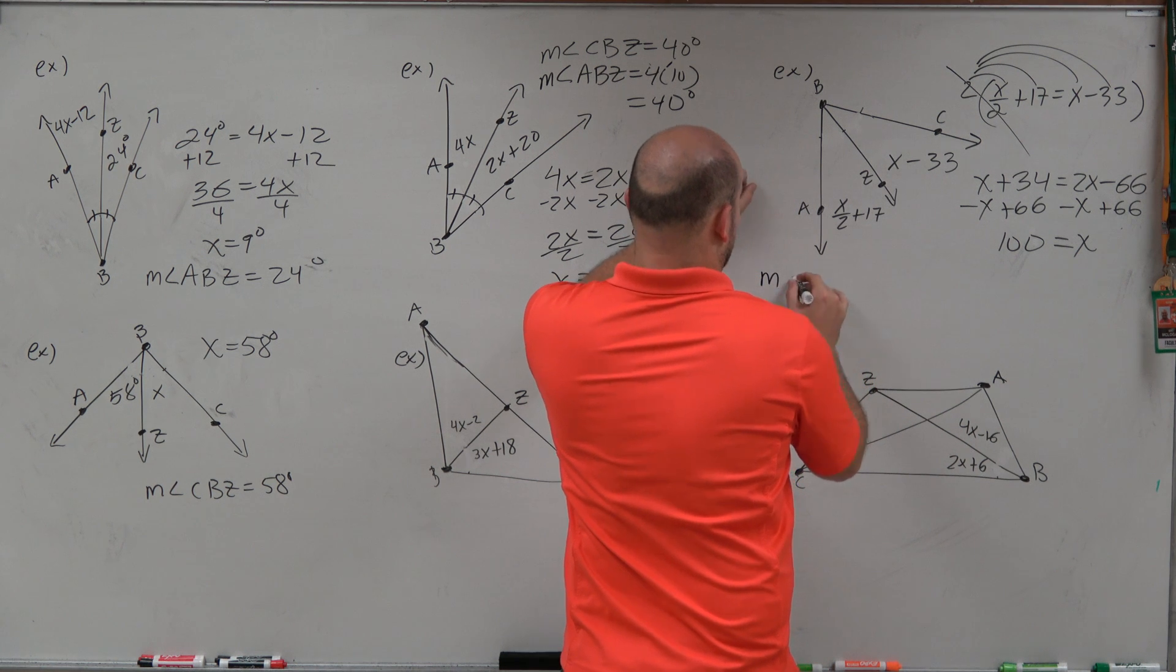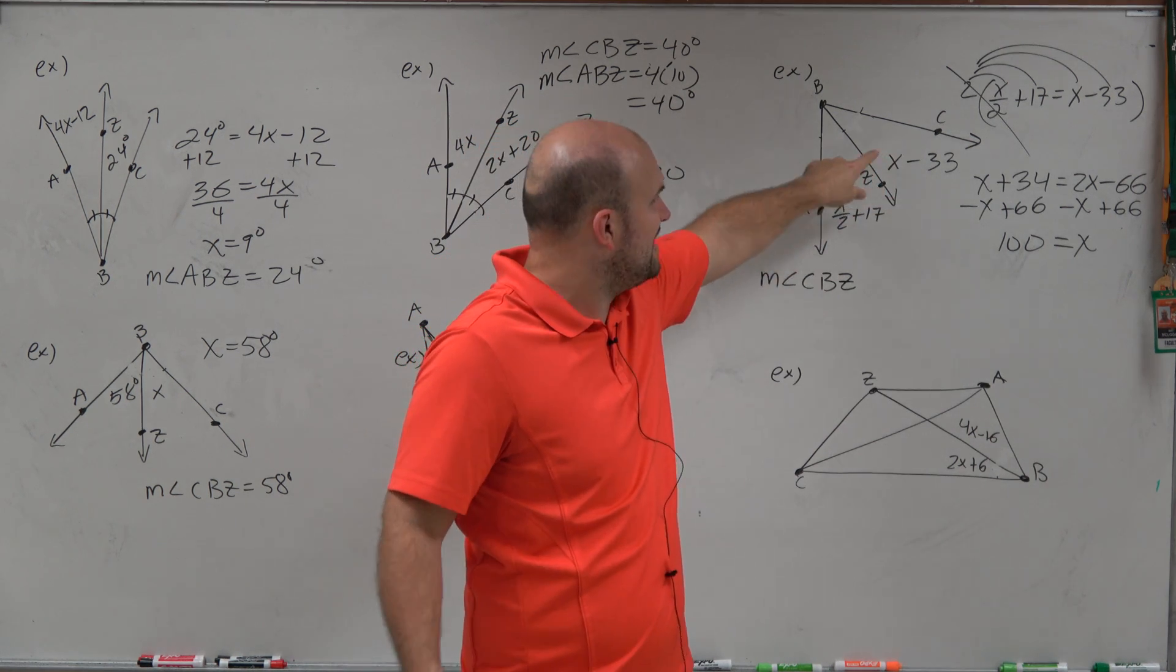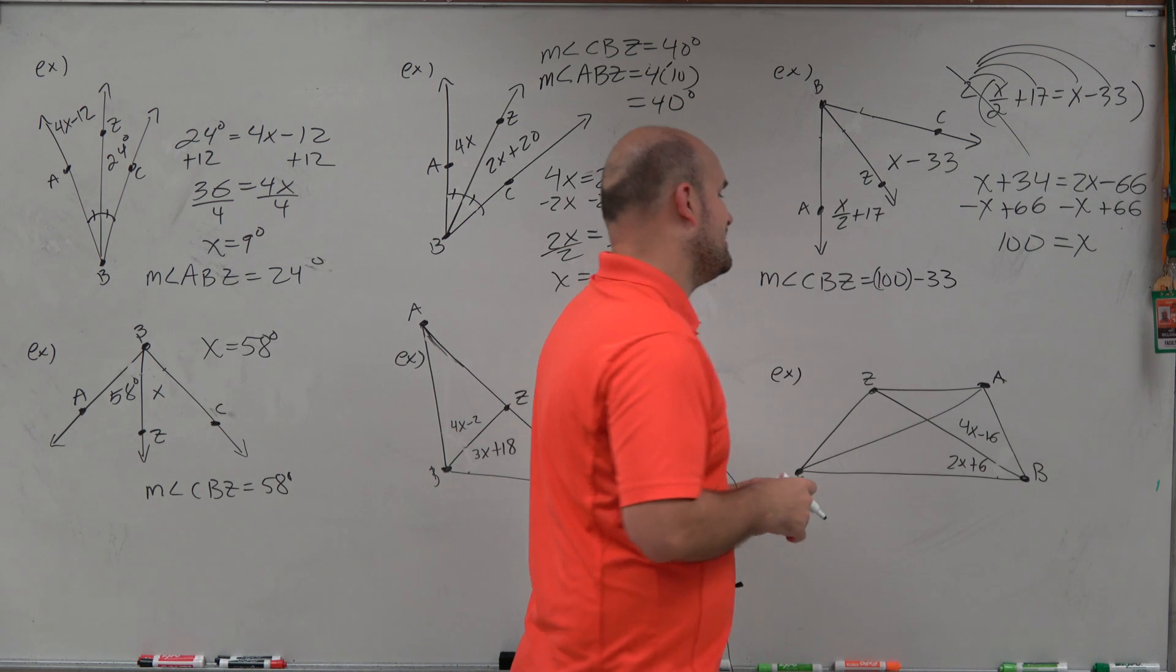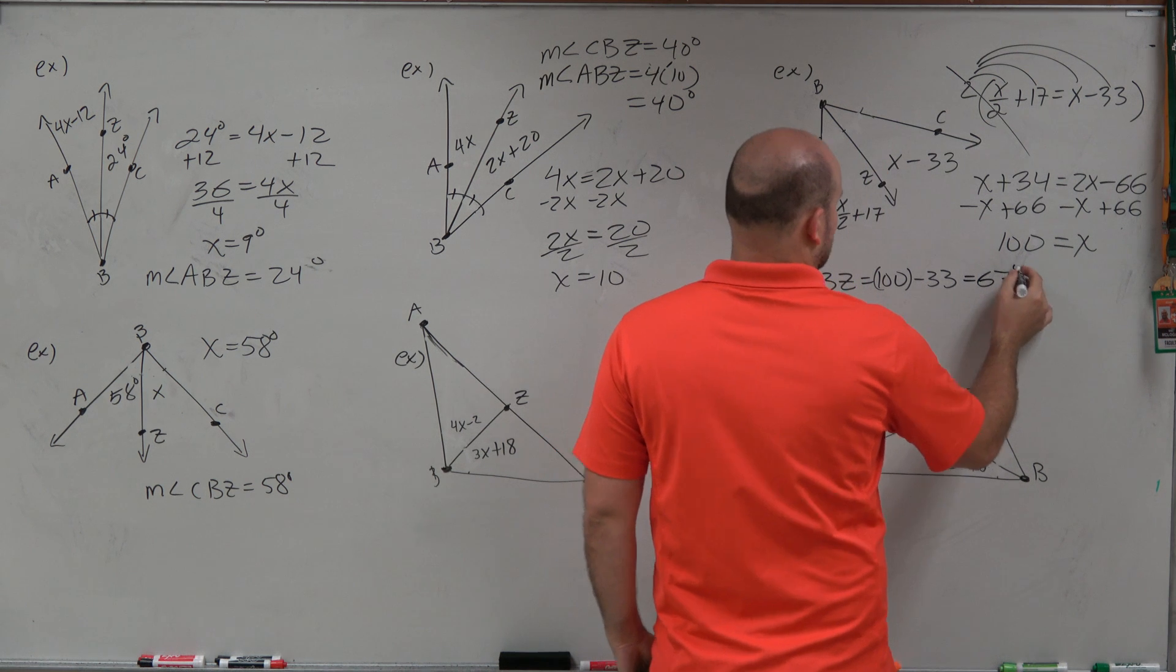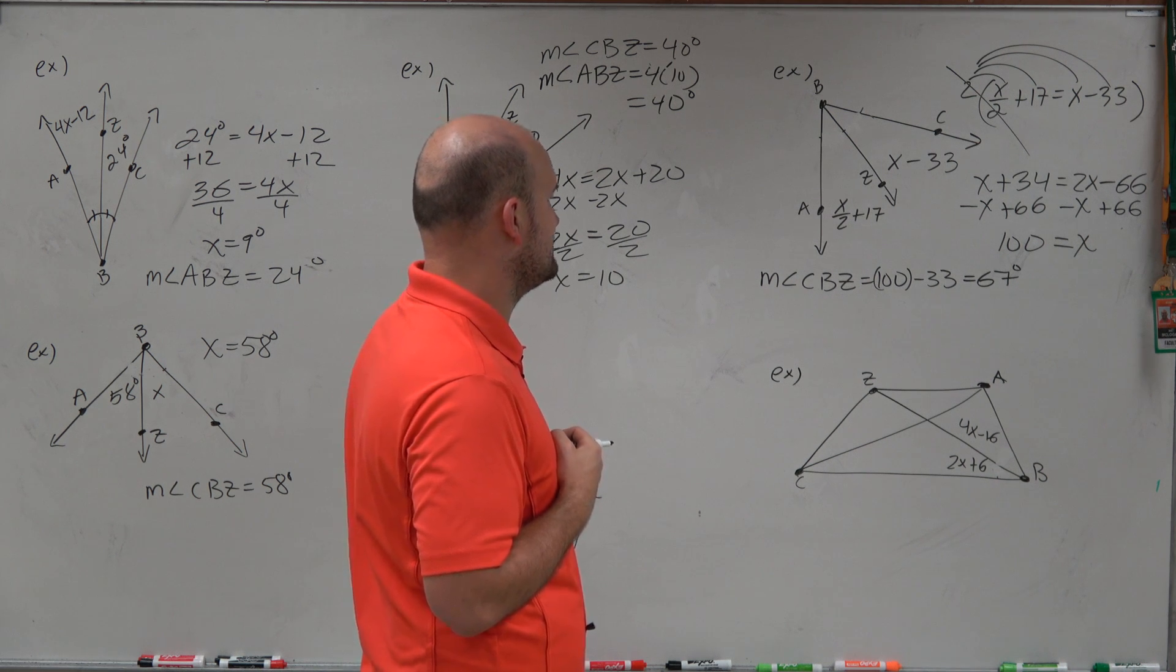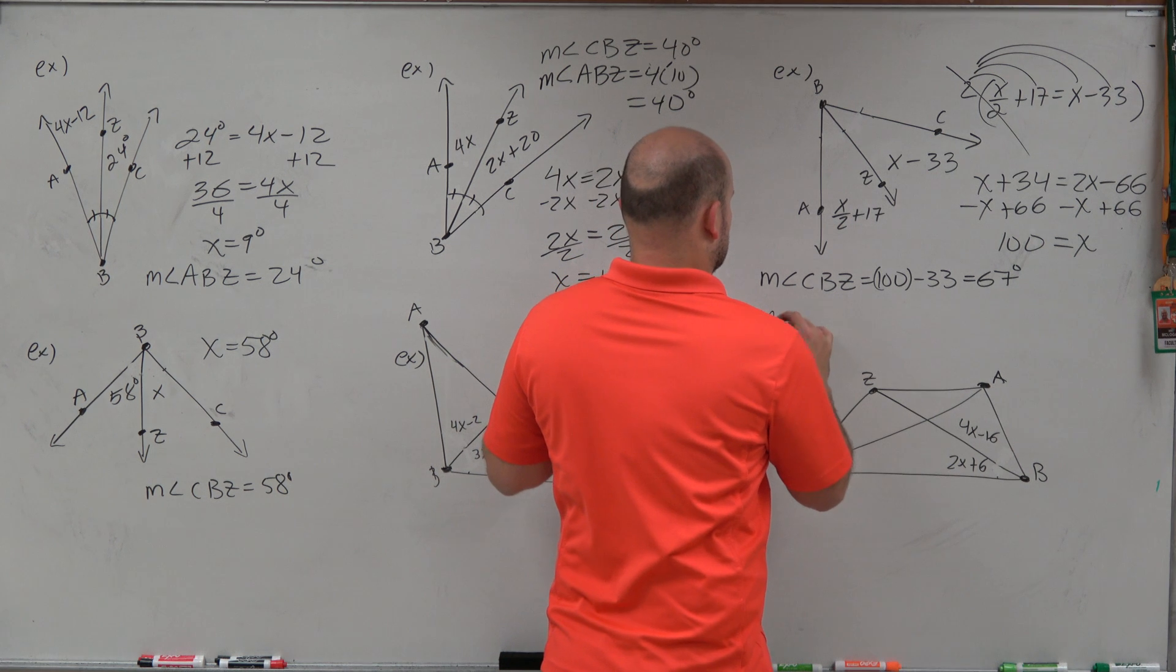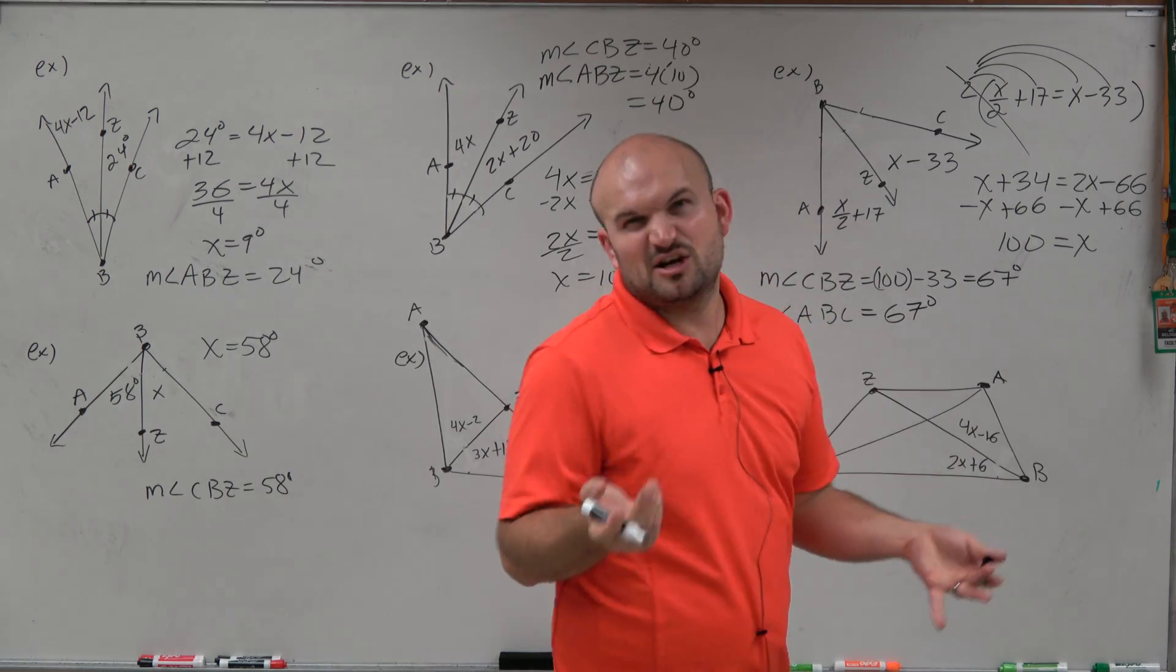Therefore, I can say that the measure of angle CBZ, and you could plug 100 into either one of these. I would probably say that plugging into this one would be better than doing the fractions. But we're going to double-check our work anyways. Is equal to 100 minus 33. And 100 minus 33 is going to equal 67 degrees. So we have is equal to 67 degrees. So let's just make sure if we did 100 divided by 2, that's 50. 50 plus 17, it'd be 67 degrees. So that's perfect as well. So the measure of ABZ is also equal to 67 degrees. And again, we know they're always going to be the same.